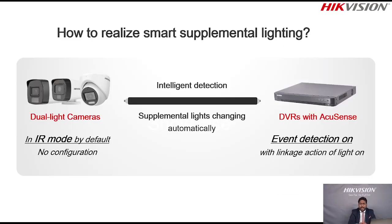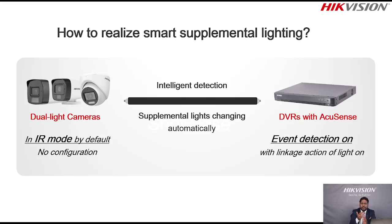To use the supplement light mode, you need to connect this camera to your Accu-Sense DVR. When the smart event is enabled, the supplement light will work smartly for you. By default the Dual Light Camera is in IR mode — change the mode setting to enable the smart supplement light.